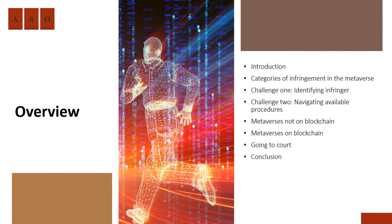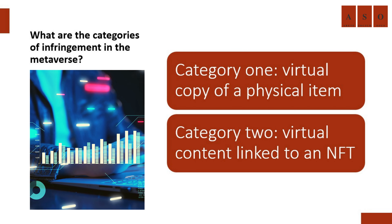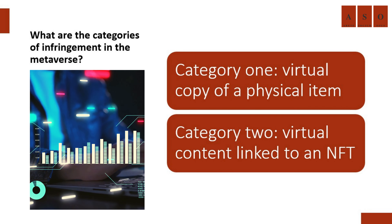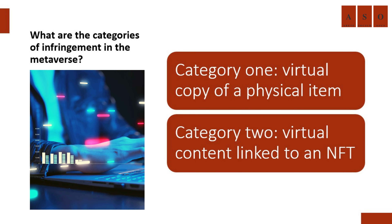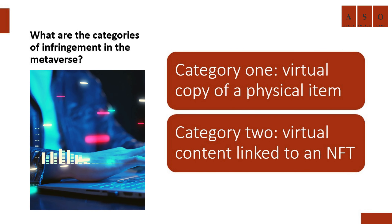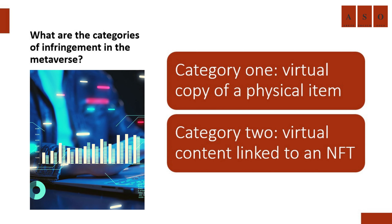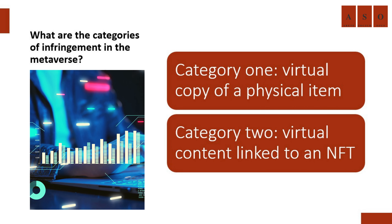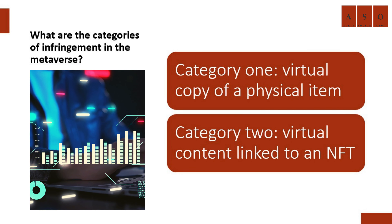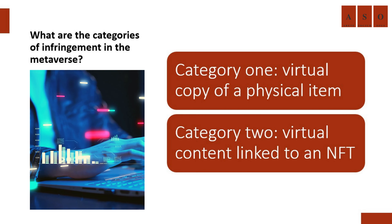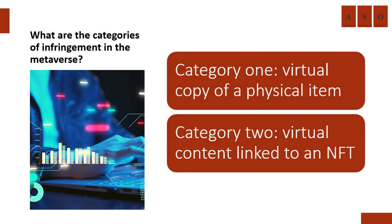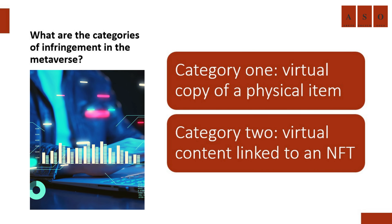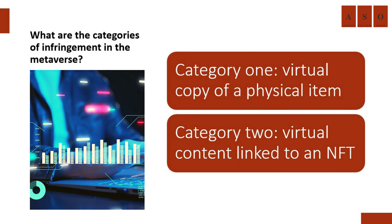Now let's discuss the categories of infringement in the metaverse. The metaverse is comprised of two categories of infringement. The first is a virtual copy of a physical item, such as a virtual MacBook or Eames classic chair. The second category is virtual content linked to an NFT, which are digital files that can be sold as unique items.